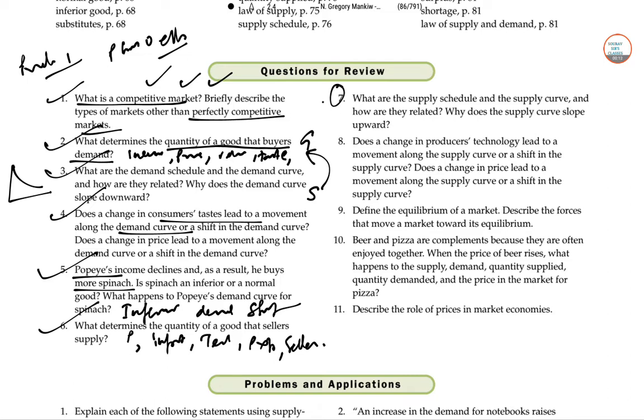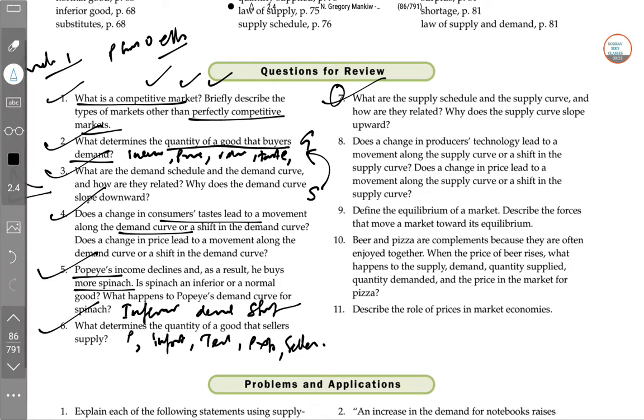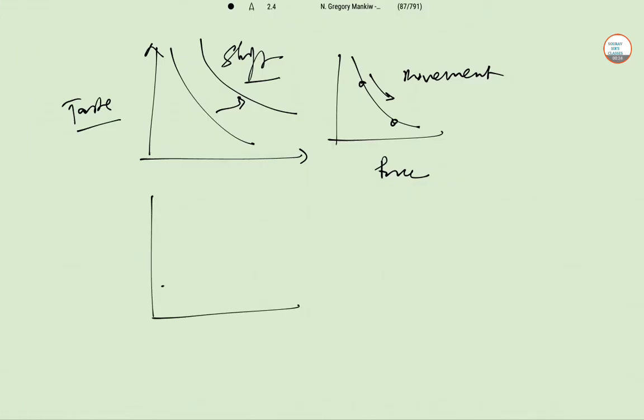Question 7 is what are the supply schedule and supply curve and how they are related. What is the supply curve. Why is the supply curve sloped upward. Supply schedule I can show you here. So if I just take the supply schedule.